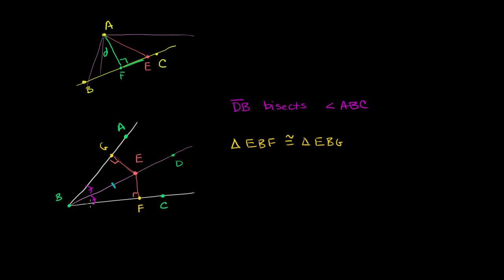And we could use angle-angle-side congruency. Or you could say: if two corresponding angles are the same, then the third angle is also going to be the same, so this angle right over here could also be the same, and you could use angle-side-angle. But either way, these two triangles are going to be congruent.